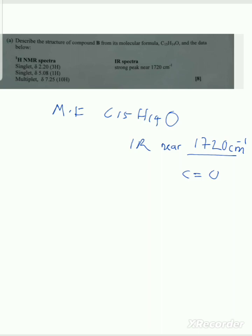We have a carbonyl group, but we don't yet know what kind — whether it is an aldehyde, ester, acid, or ketone. Looking at the range from 1720 to 1705 cm⁻¹, it is likely a ketone. However, we are not fully certain yet because we still need the NMR data to confirm.